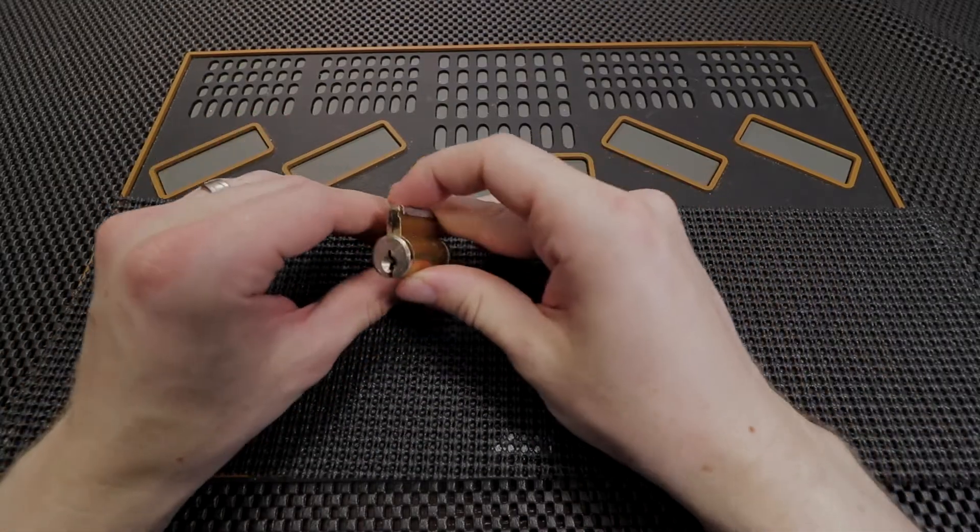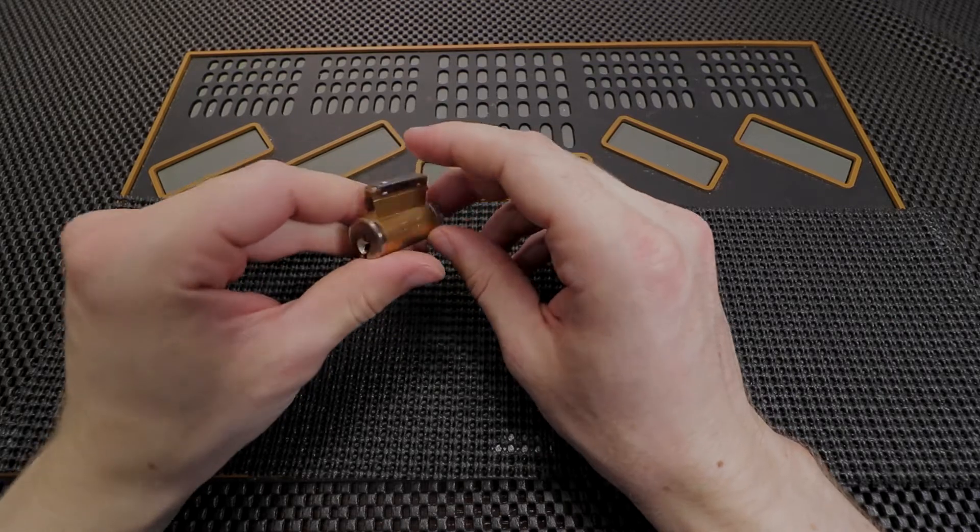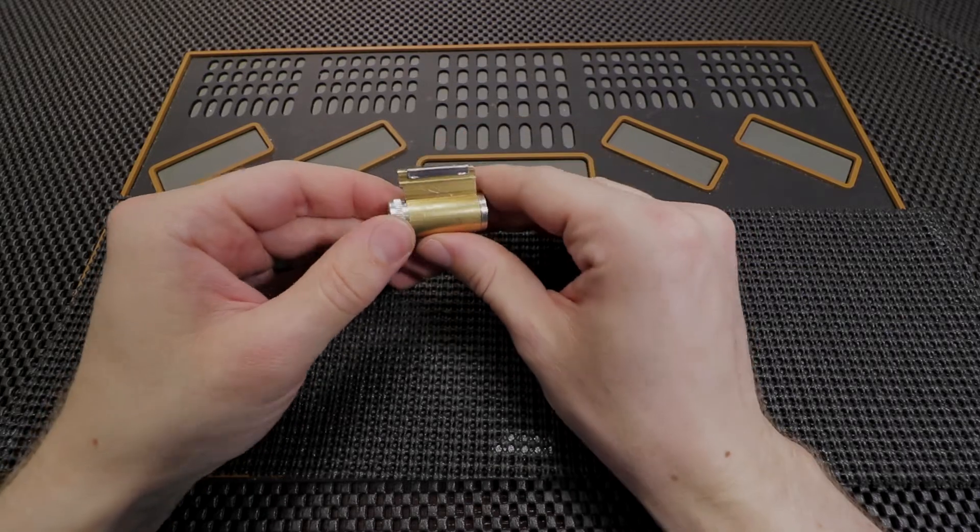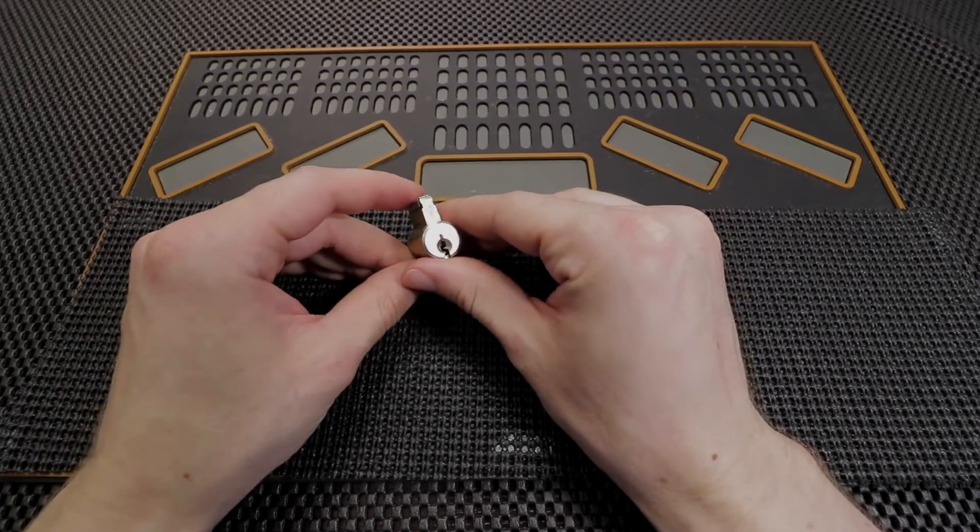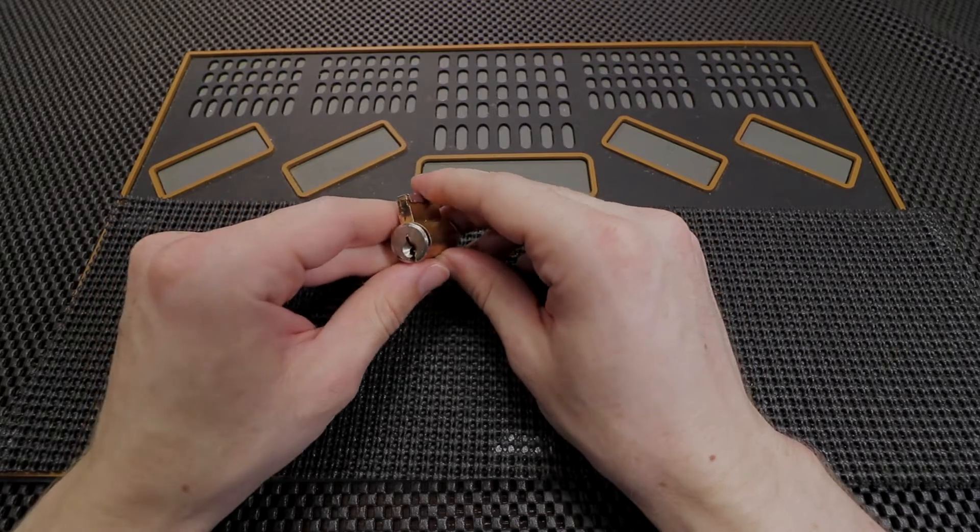Alright, so what is this lock? This lock is a Corbin-Rustwin kick cylinder. It comes with a 6-pin key, and it is pinned up to all the factory pins that it came with. This is not a challenge lock. This is just a regular lock that is to provide you a challenge because it is generally a pretty decent lock.